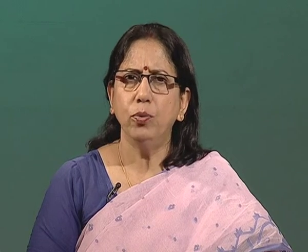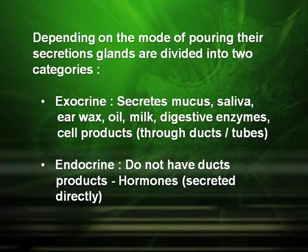Columnar and cuboidal cells can get specialized and act as glandular epithelium, which may be unicellular or multicellular. Depending on the mode of secretion, they are divided into two categories: exocrine glands and endocrine glands. Exocrine glands secrete mucus, saliva, and earwax through ducts. Endocrine glands do not have ducts and their products, called hormones, are directly secreted into the bloodstream.